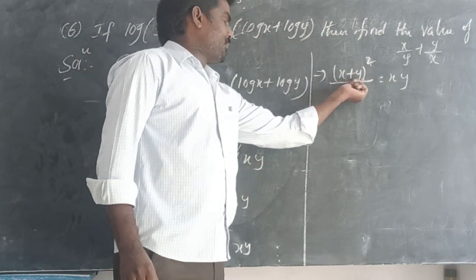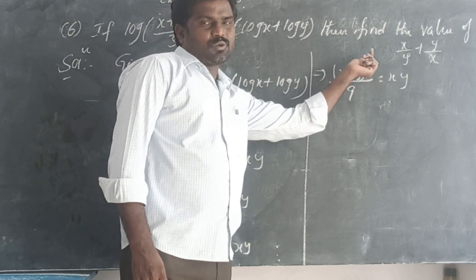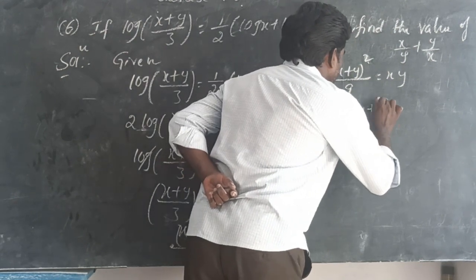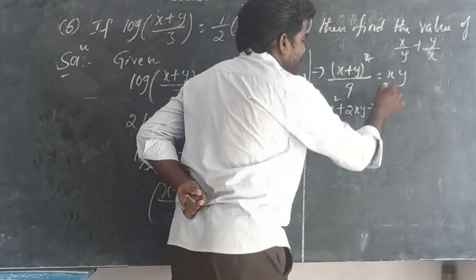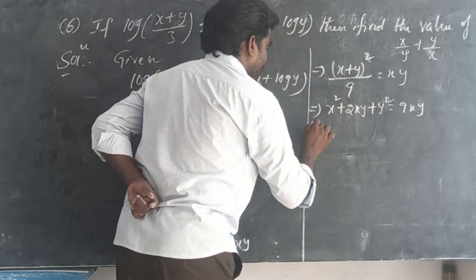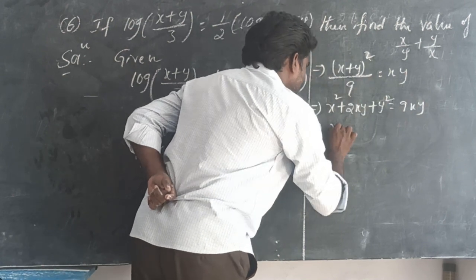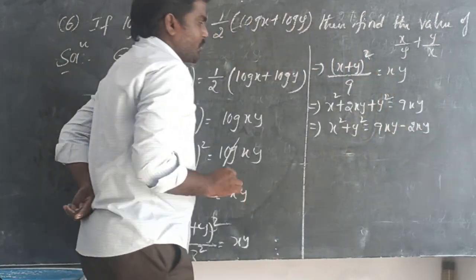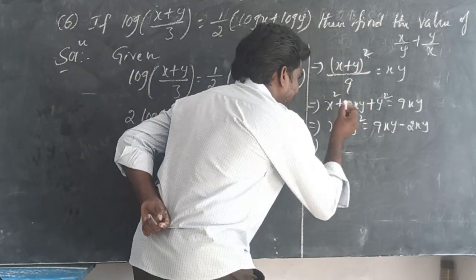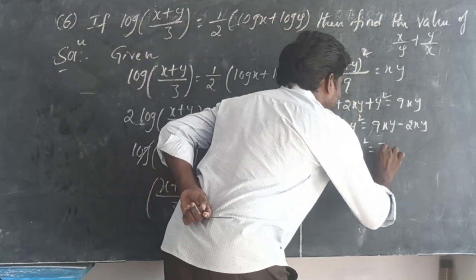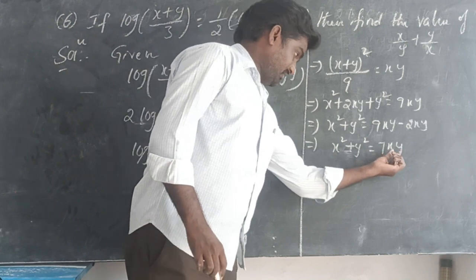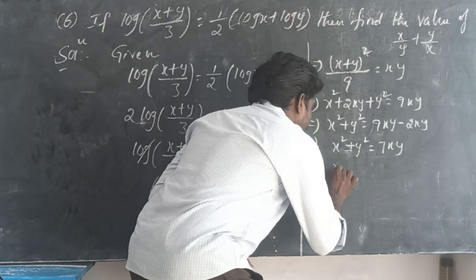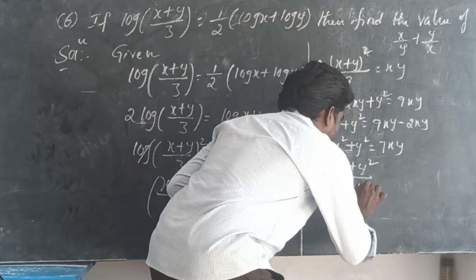Expanding (x+y)² using the formula a²+2ab+b², we get x²+2xy+y² divided by 9 equals xy. So x²+2xy+y² equals 9xy. Moving 2xy to the right side: x² + y² equals 9xy minus 2xy, which is 7xy.